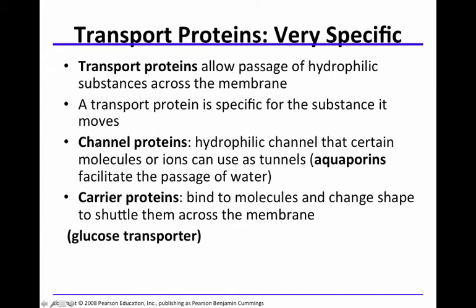There are different types of transport proteins. Channel proteins provide a hydrophilic channel that certain molecules or ions can use as tunnels. Aquaporins are channel proteins that facilitate the passage of water. Carrier proteins are another type — they bind to molecules, change shape, and shuttle those molecules across the membrane to carry them through. An example is a glucose transporter.